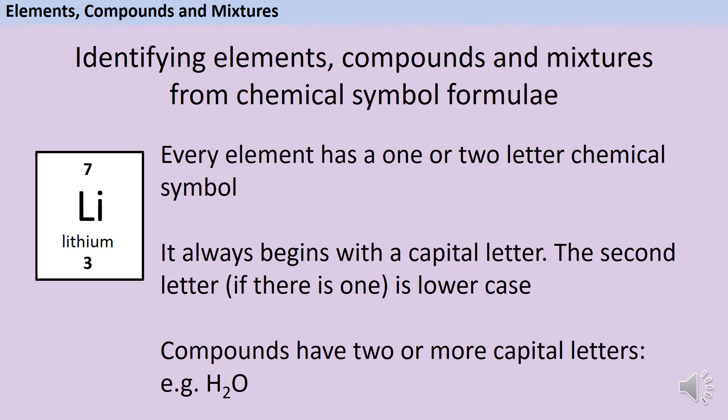Every element in the periodic table is assigned a one or two letter chemical symbol. The chemical symbol always begins with a capital letter. If there's a second letter, then this is always lowercase. So this means that when you're looking at a full chemical symbol formula, every time that you see a capital letter, that represents a new element. And we know if there's more than one element, then this must be a compound.